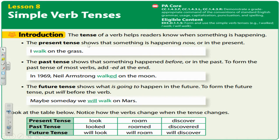The present tense shows that something is happening now or in the present. For example, I walk on the grass. The verb walk in this sentence is saying what's happening now. It is in the present tense.